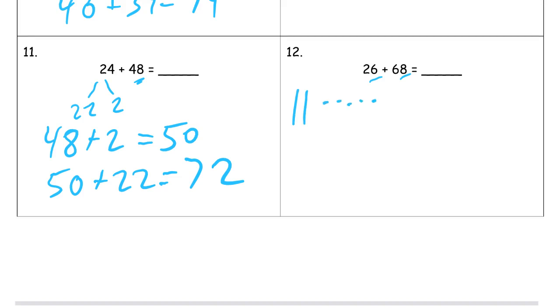So the 26 is 2 tens and 6 ones. 1, 2, 3, 4, 5, 6. And the 68 is going to be 6 tens. 1, 2, 3, 4, 5, 6, and 8 ones. 1, 2, 3, 4, 5, 6, 7, 8.